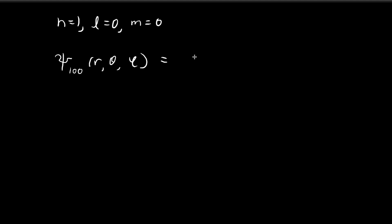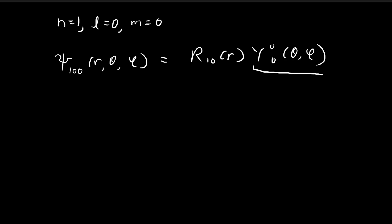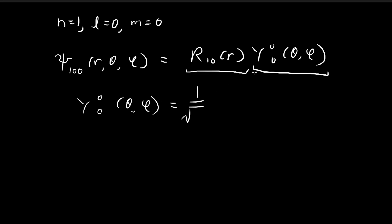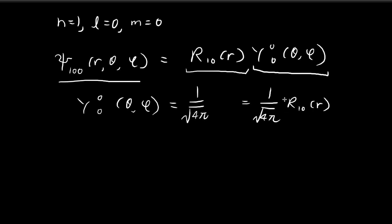ψ₁₀₀ is equal to the radial component R₁₀(r) multiplied by the angular component Y₀₀(θ, φ). In the previous section on spherical harmonics, I already derived this expression, so I'll just give the answer: Y₀₀ = 1/√(4π). So the ground state is going to be (1/√(4π)) × R₁₀(r). We now shift our focus to finding R₁₀.